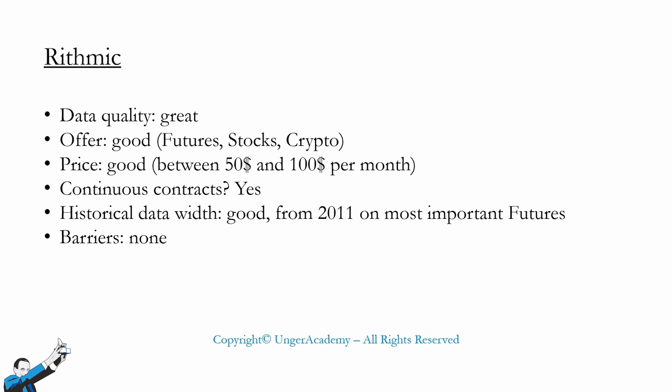Now to the next data feed called Rhythmic. The quality of Rhythmic's data is really good. It's worth noting that Rhythmic is mostly used by discretionary traders who need to operate on tick charts — not by minutes or seconds, but by ticks — using extremely fast charts for short-term trading, which for systematic retail traders aren't so important since tick data won't be used. The offer is good, on par with other providers, and offers futures, stocks, and crypto. The cost is very good, around $50 to $100 per month. There are continuous contracts, but the range of historical data isn't as extensive — starting from 2011 on the main futures, which is less than IQ Feed or TradeStation and could influence our strategies.